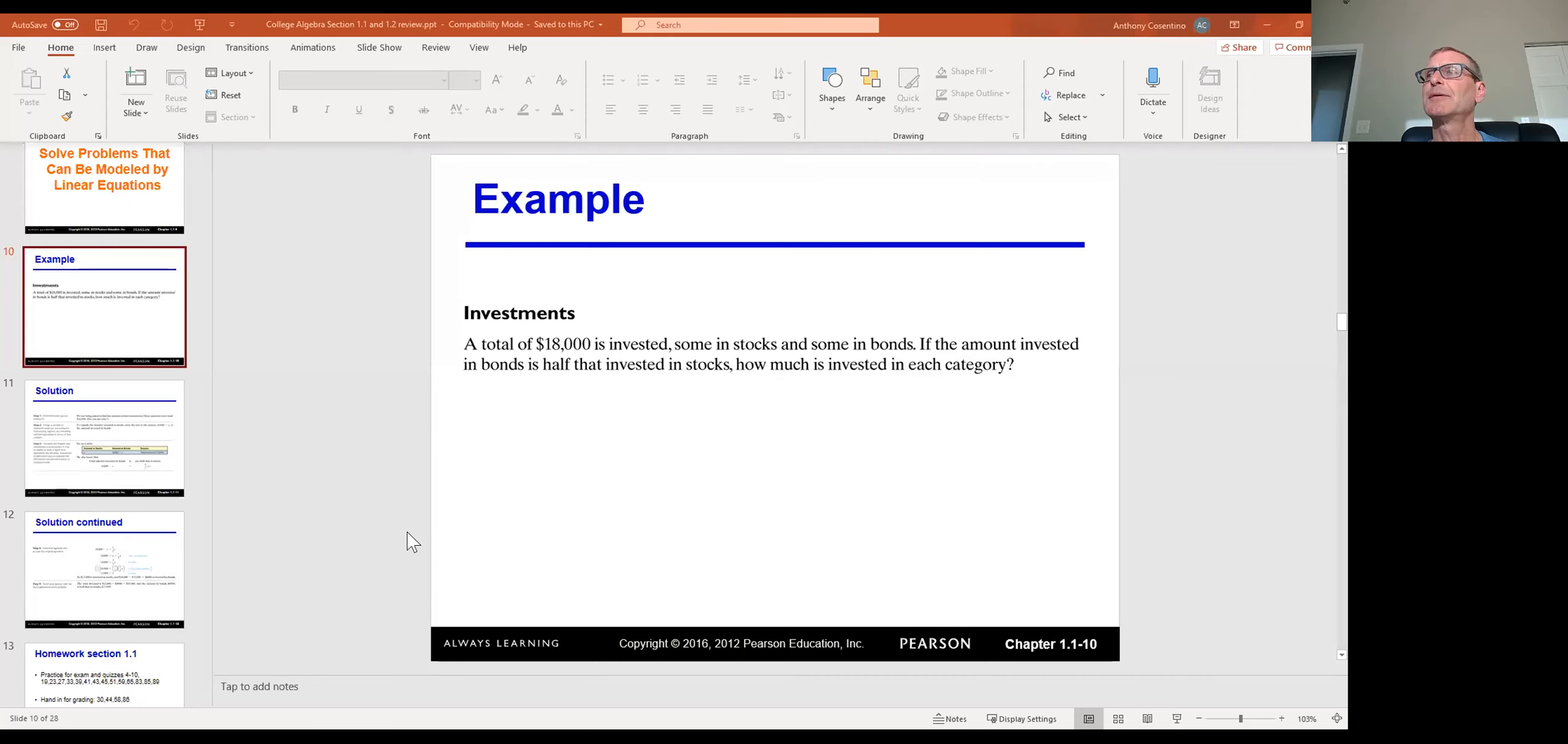The last problem to demonstrate here in section 1.1 is a word problem. Let me read this to you: A total of $18,000 is invested, some in stocks and some in bonds. The amount invested in bonds is half the amount invested in stocks. So how much is invested in each category?